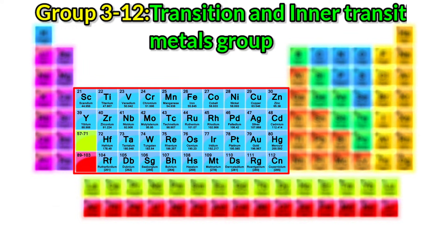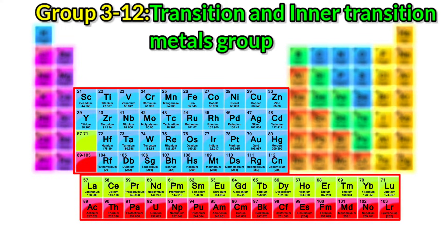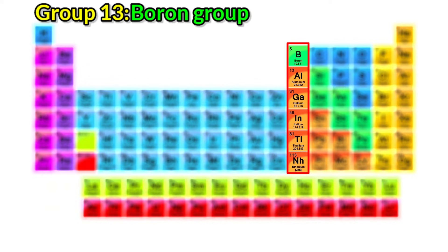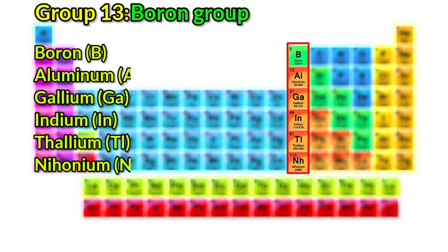Groups 3 to 12: Transition and inner transition metals group. The elements lying from group 3 to 12 on the periodic table are named as transition metals and inner transition metals. The elements in the two bottom rows of the periodic table are also included in these groups. They are placed in two separate rows at the bottom because they show a few different properties. Actually the elements in the bottom rows are the extension of group 3 only, so they are included in group 3, but as these elements have a few different properties they are grouped as separate elements known as inner transition elements.